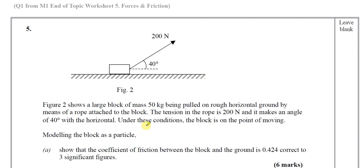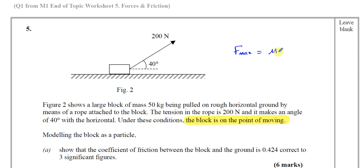One of the most important points here is that the block is on the point of moving, meaning it's in equilibrium. The resultant force on this block is zero. However, because it's on the point of moving, we have reached what's called F_max — the maximum possible value of friction has been reached. Any increase in force, or a change in the angle to make it less, would cause the block to move. So it's on the limit of equilibrium, which means the value of friction F_max = μR has been reached because of that phrase.